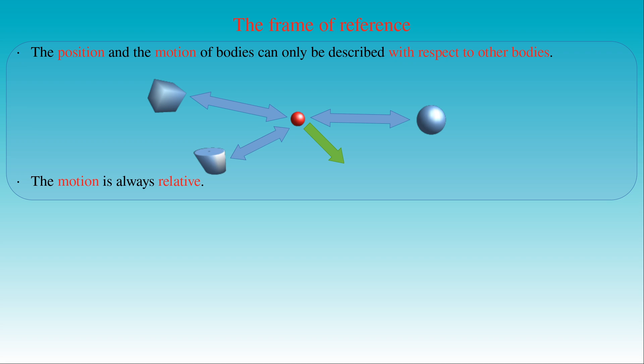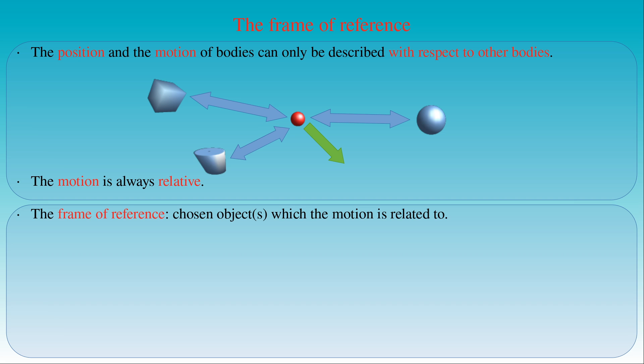If we want to describe the motion of any object, then we have to choose other objects as reference bodies and compare the instantaneous position of the moving body to the positions of the reference bodies. The number of reference objects is arbitrary, provided that they do not change their spatial positions with respect to each other. We call this group of objects the frame of reference.